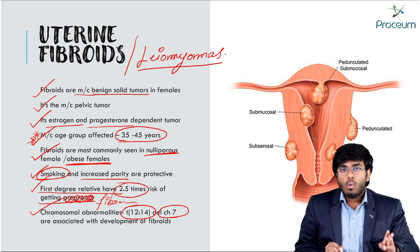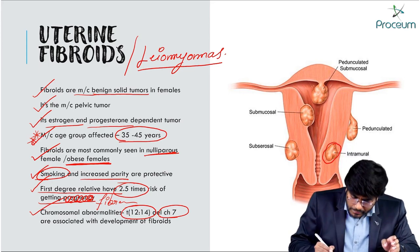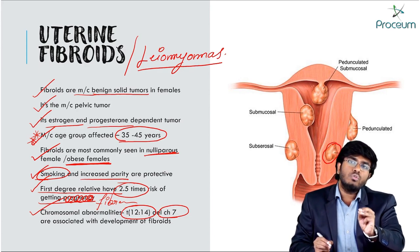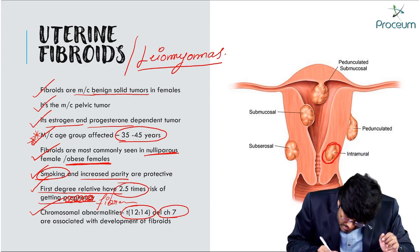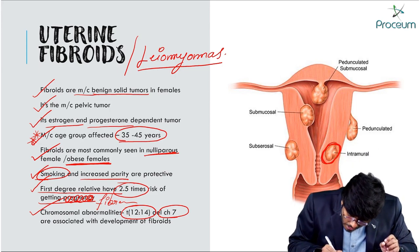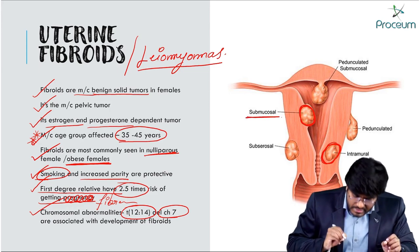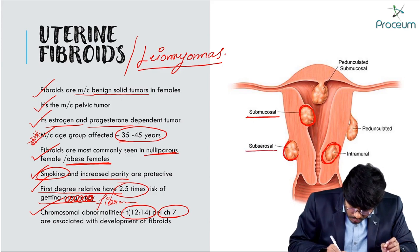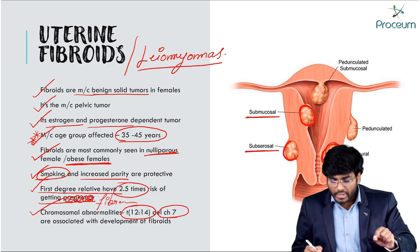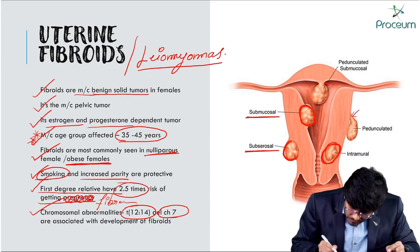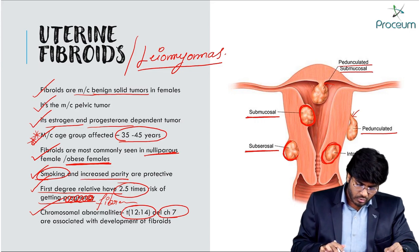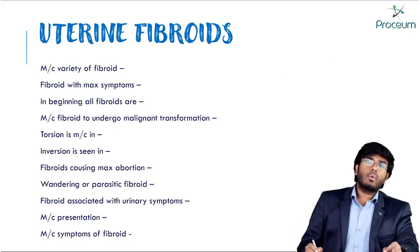Fibroids are classified into three main types. Intramural fibroids are localized to and growing inside the wall of the uterus. Submucosal fibroids grow inward into the uterine cavity. Subserosal fibroids grow outward outside the uterus. If any fibroid has a stalk, it is called a pedunculated fibroid.